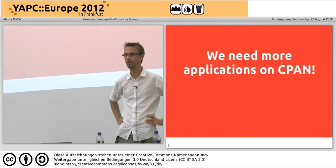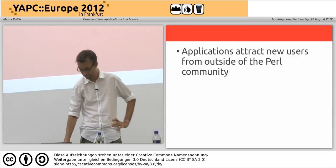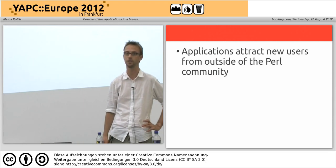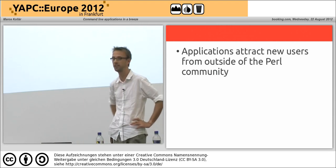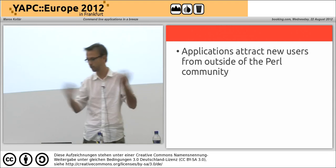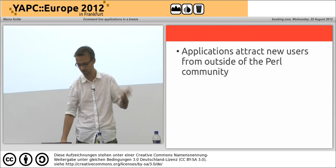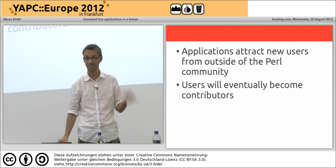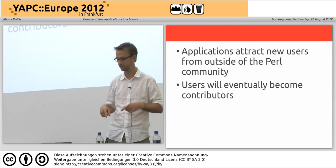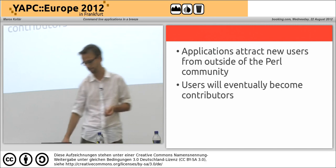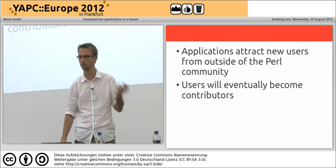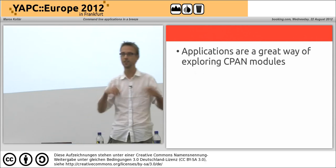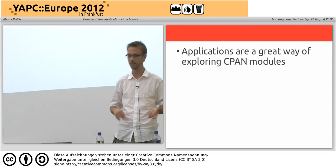I demand we need more applications on CPAN. Why? Because they attract new users from outside of the Perl community. If they're looking for some kind of problem solution, they might stumble upon your application, and these users will eventually become contributors if they're missing some features or find bugs. And of course, applications are a great way of exploring CPAN.